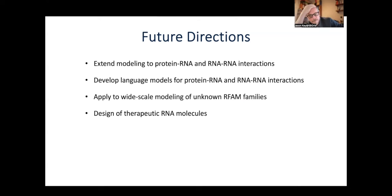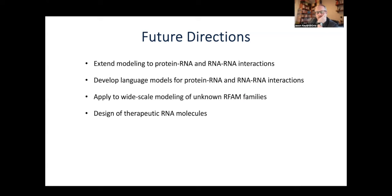Yes, absolutely. For proteins and RNA, if MSAs have no homologous sequences or no evolutionary history, accuracy tends to be much lower. For synthetic aptamer RNAs, we don't have any evolutionary history, so our multiple sequence alignments are basically empty. The accuracy is definitely a lot lower for those targets where we can't learn from evolutionary history — we have to apply these large language models instead.